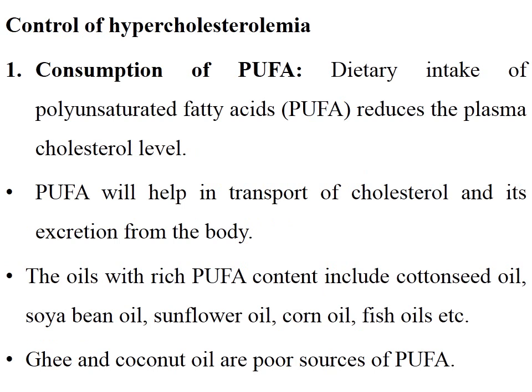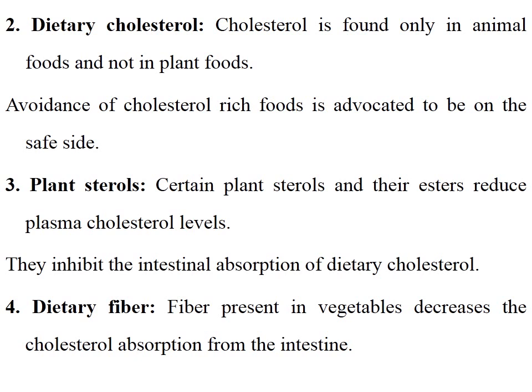Control of hypercholesterolemia: First, consumption of PUFA — polyunsaturated fatty acids — reduces plasma cholesterol levels. It helps in transport of cholesterol and its excretion from the body. Oils rich in PUFA include cottonseed oil, soybean oil, sunflower oil, corn oil, and fish oil. Ghee and coconut oil are poor sources of PUFA. Dietary cholesterol is found only in animal foods, not in plant foods, so avoidance of cholesterol-rich food is advocated. Certain plant sterols and their esters reduce plasma cholesterol by inhibiting intestinal absorption of dietary cholesterol. Dietary fiber present in vegetables also decreases cholesterol absorption from the intestine.